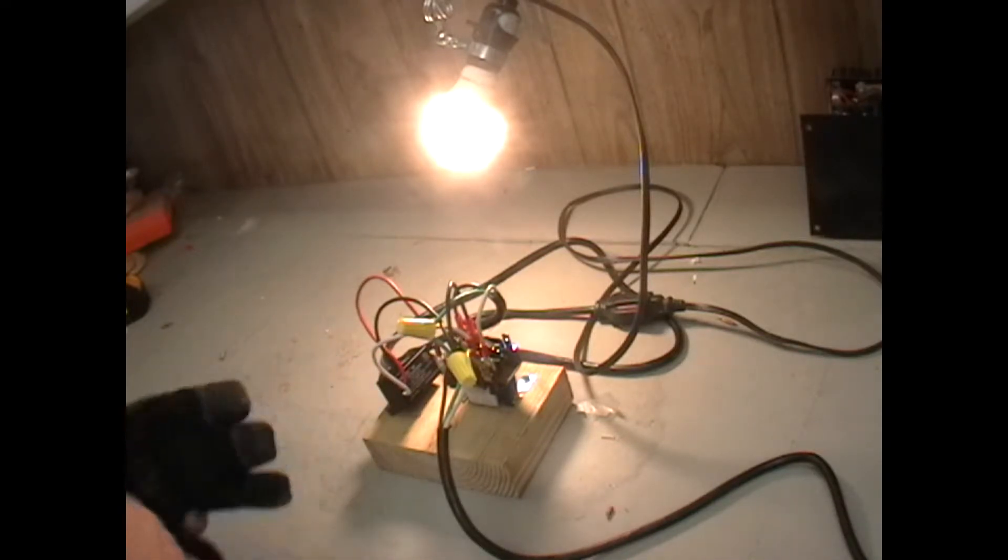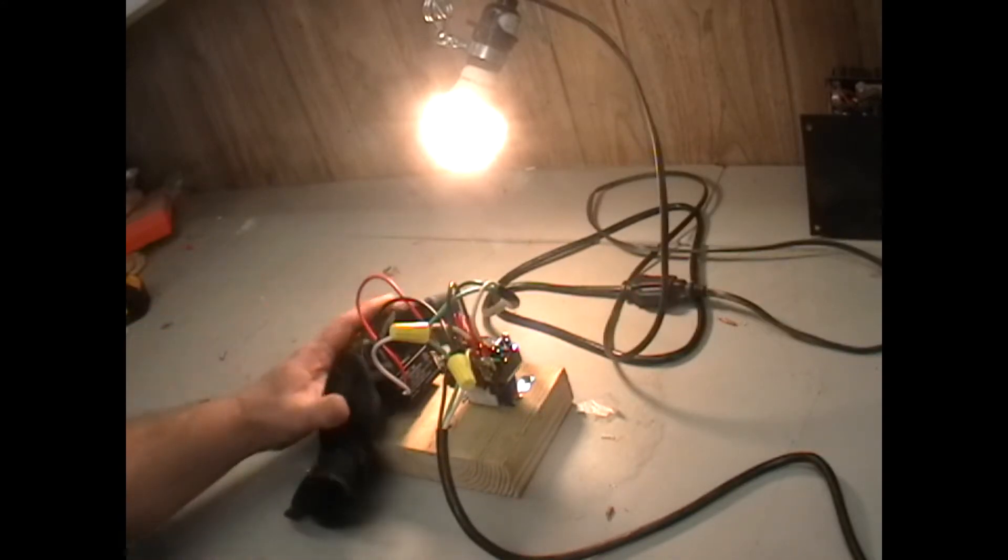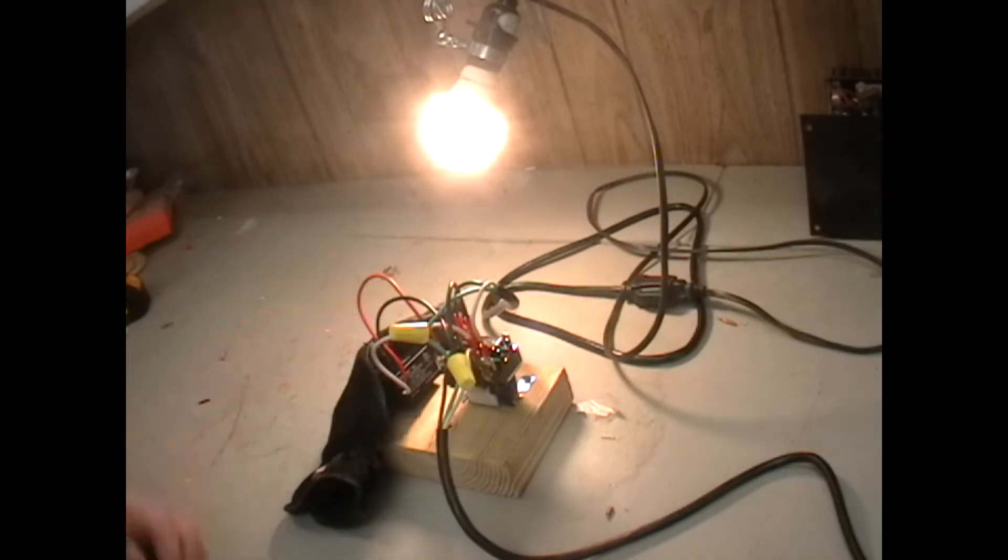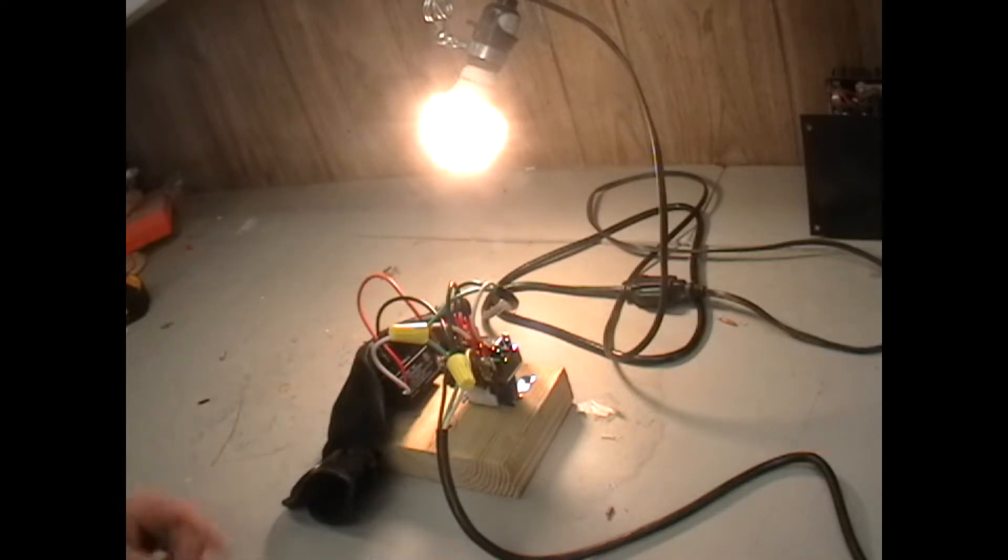But basically how this works is instead of using a photocell to power our water feature pump, or in this case this light bulb, what we do is we use the photocell to power a relay that has a normally closed circuit.